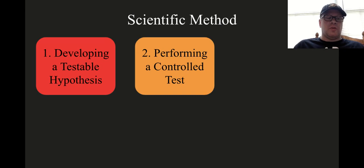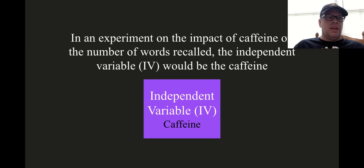The second step of the scientific method is performing a controlled test. In a controlled test, there is a variable condition that is known as the independent variable, which is a stimulus or condition that the experimenter changes independently of all of the other controlled experimental conditions.